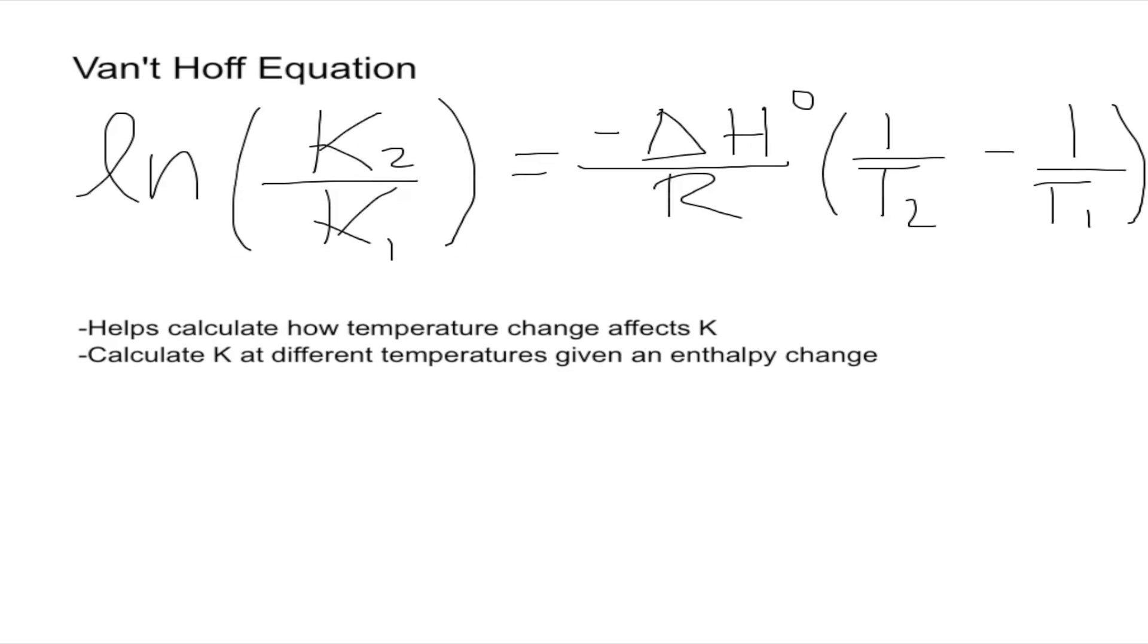In other words, we can calculate K at different temperatures as long as we have an enthalpy change. This last sentence will tell you when to use the Van't Hoff equation. We have different temperatures. If you take a look at the equation, right here we have T2 and T1.